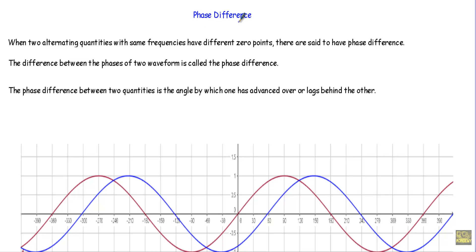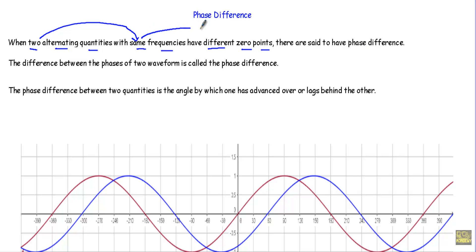When two alternating quantities with the same frequencies have different zero points, they are said to have a phase difference. When two alternating quantities have the same frequency but different zero points or different origins, we can say there is a phase difference between those two waveforms. The phase difference between the phases of two waveforms is called phase difference.